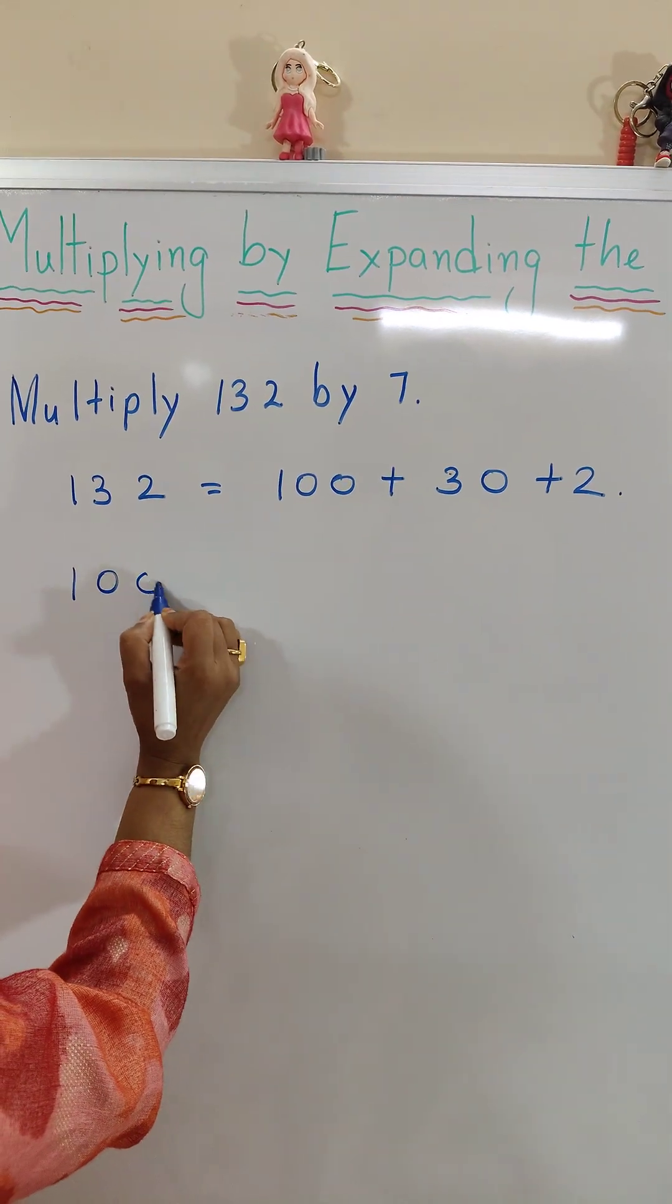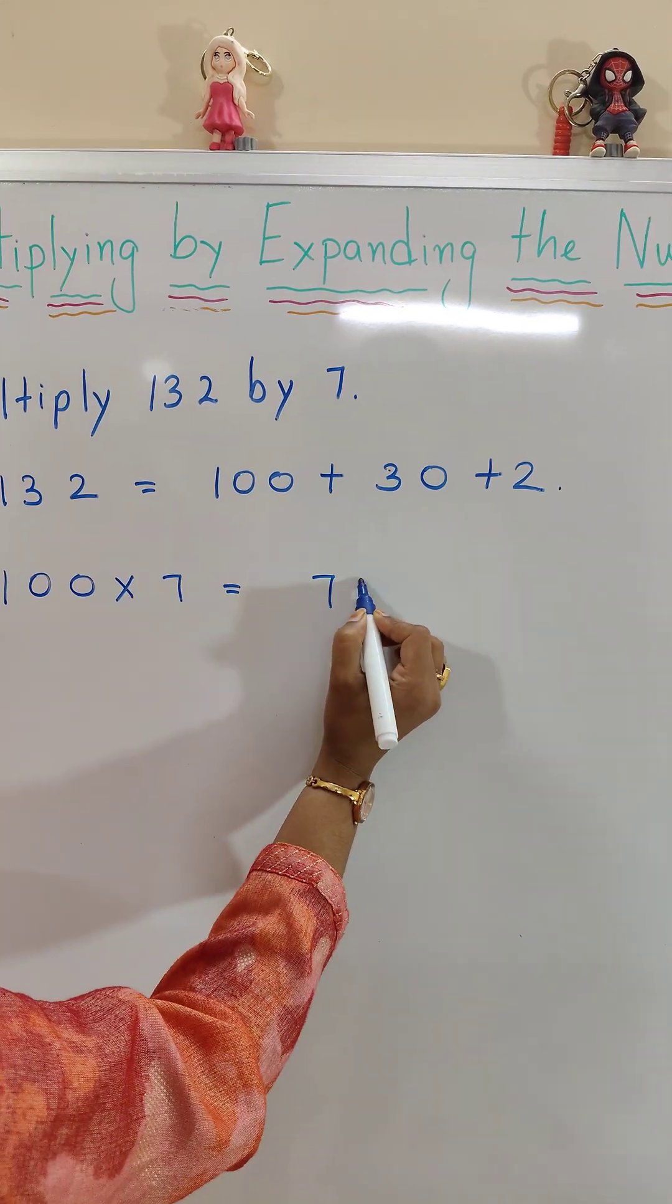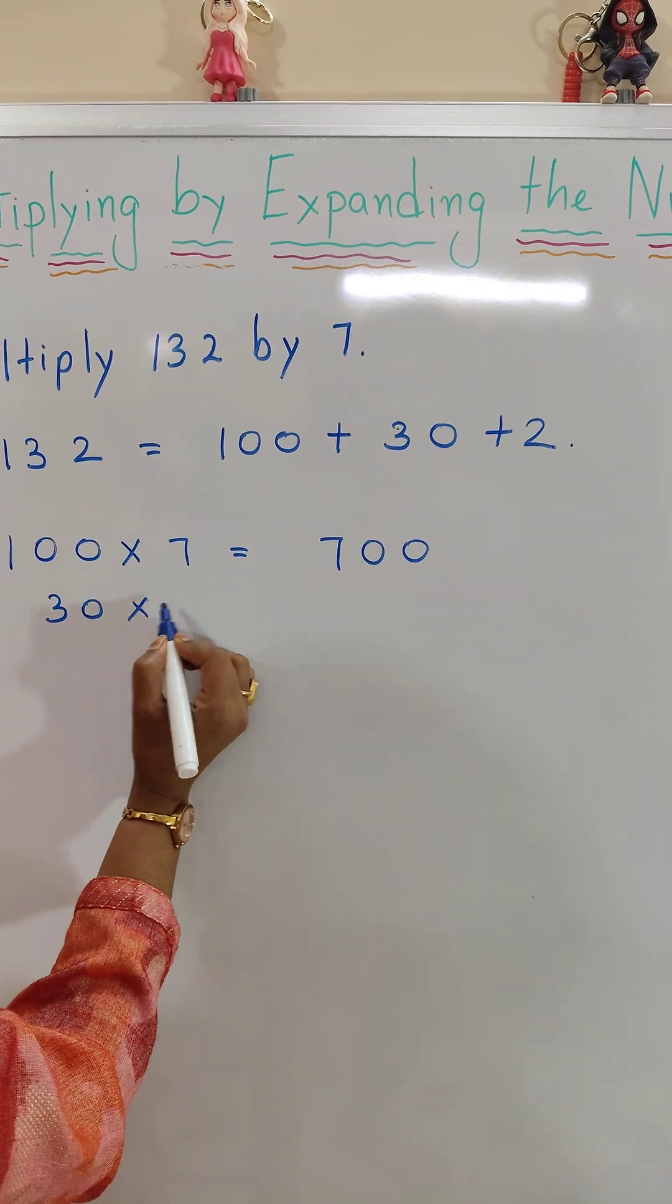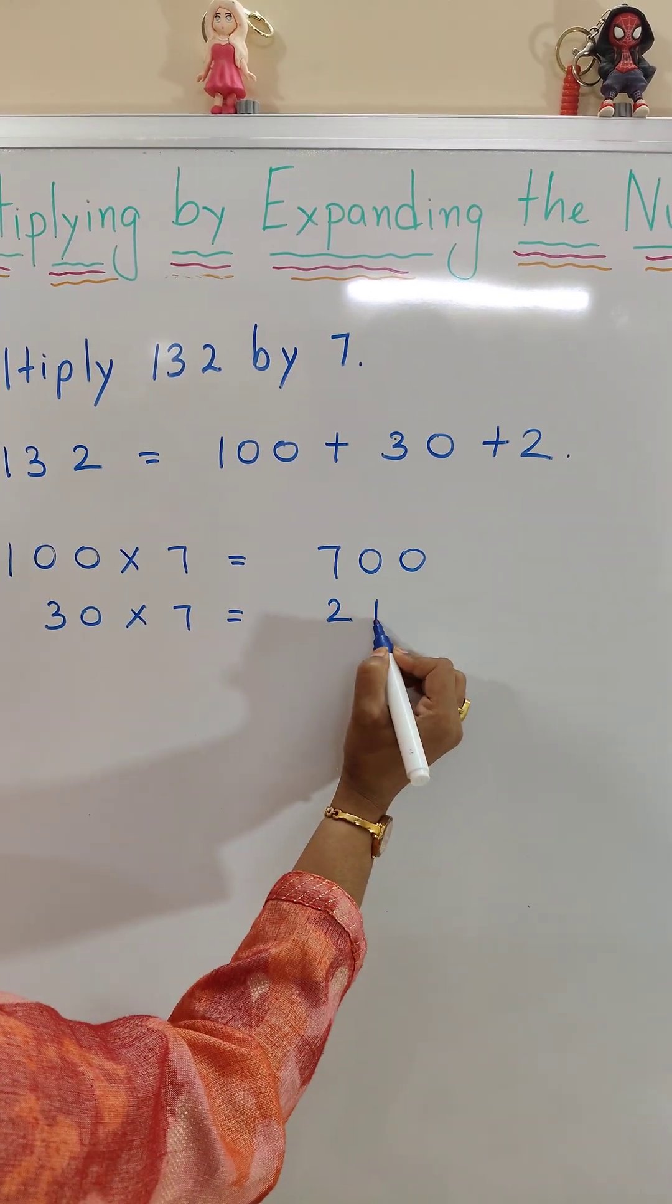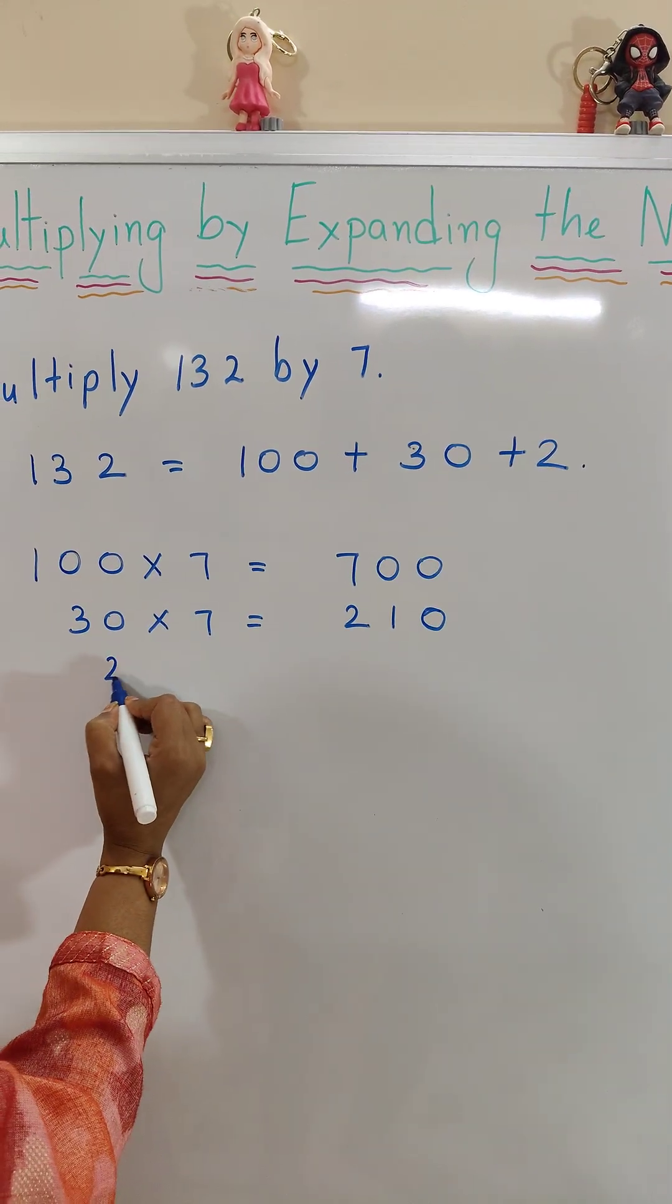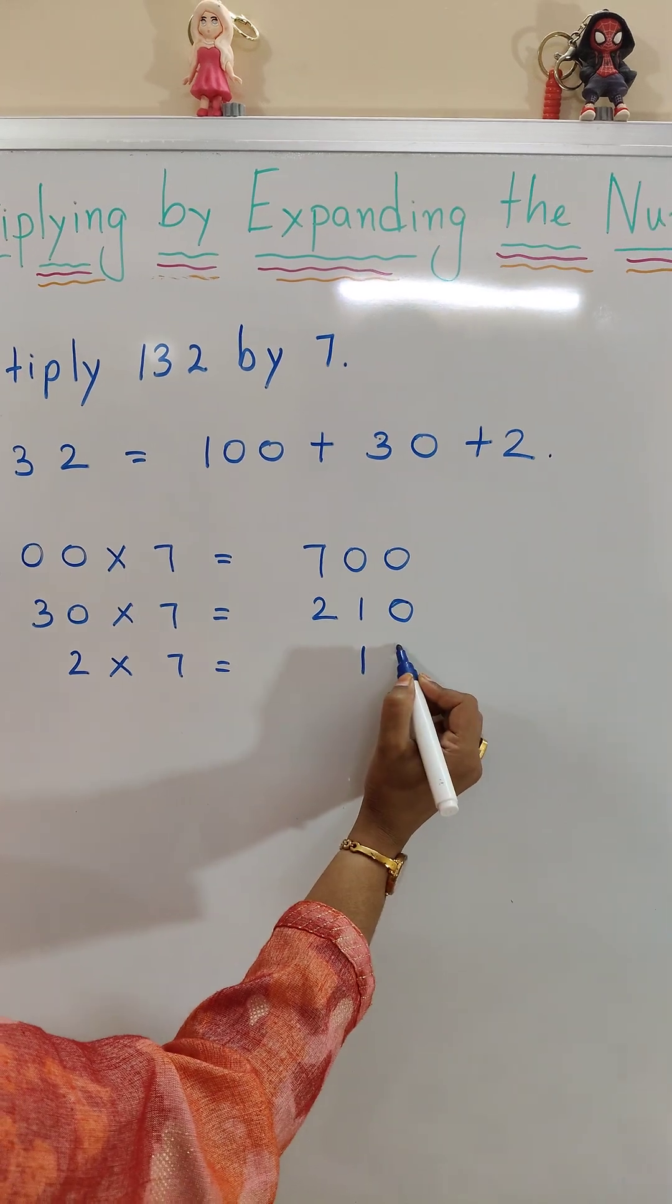So 100 times 7 is equal to 700. 30 times 7 is equal to 210. 2 times 7 is equal to 14.